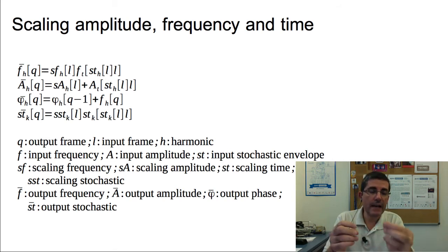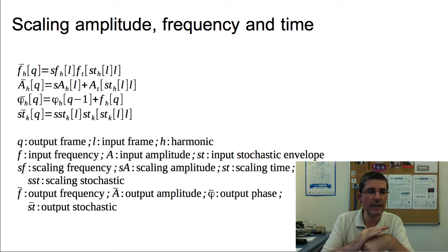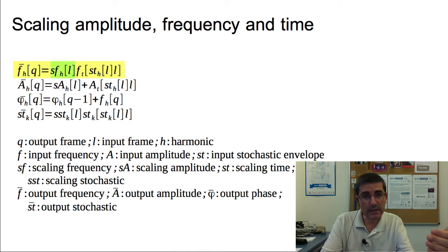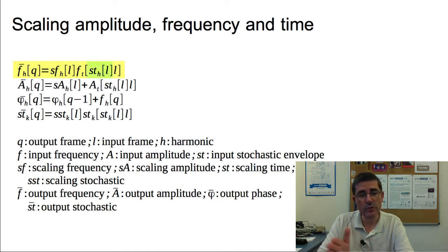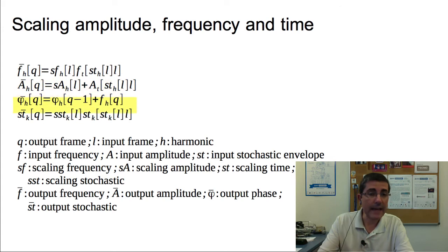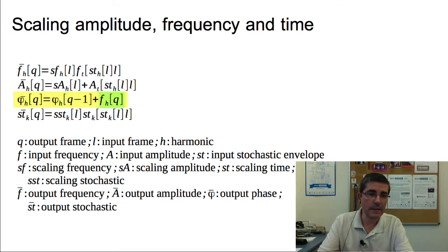What is actually done is very similar to what was presented for the sinusoidal model. The frequencies of the harmonics can be scaled by a factor, and the time of the reading of these frequency values can also be changed in order to obtain a time scaling operation. The amplitude is handled the same way, and the stochastic component is handled in the same way. The phases are generated by starting from an initial phase and then adding the frequency of every harmonic to that phase so we can generate the instantaneous phase.